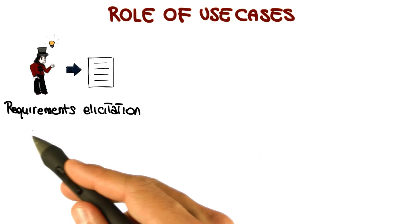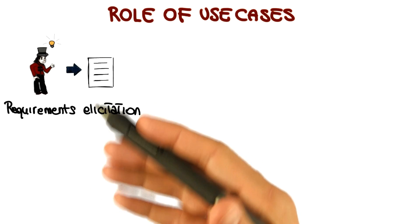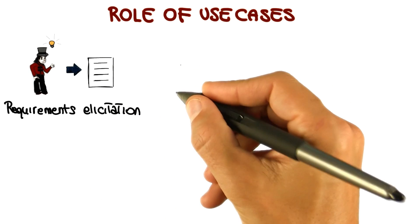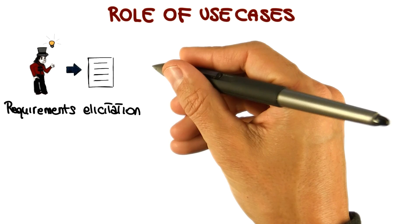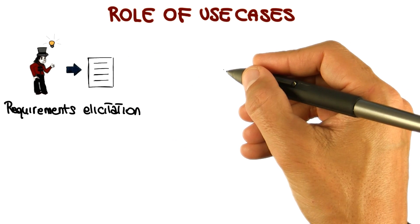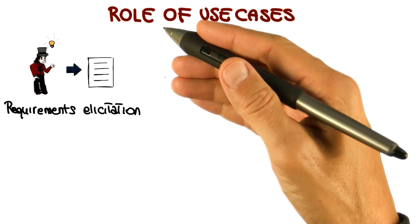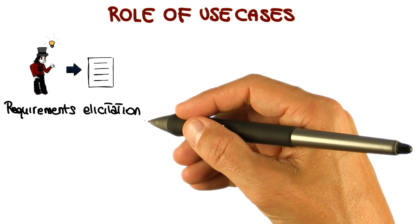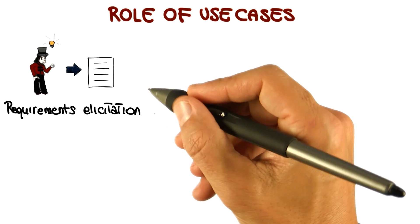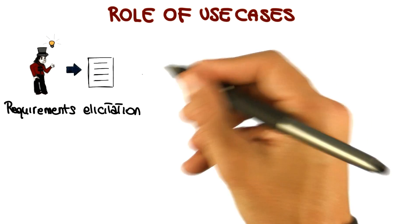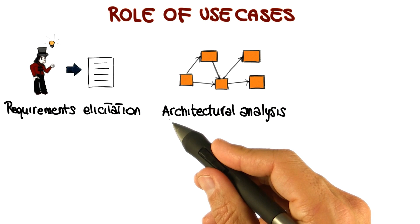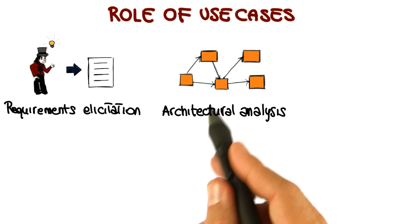A first obvious role is for requirement solicitation. It is much easier to describe what the system should do if we think about the system in terms of scenarios of usage, rather than trying to describe the whole functionality of the system at once. Use cases can help performing a more effective requirement solicitation.